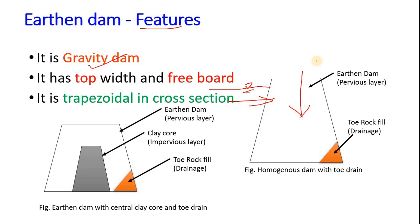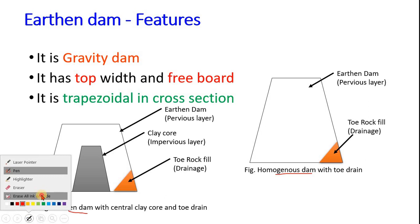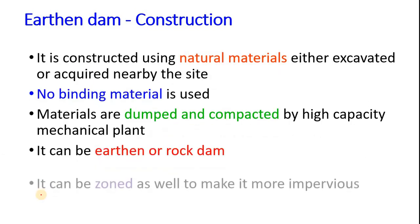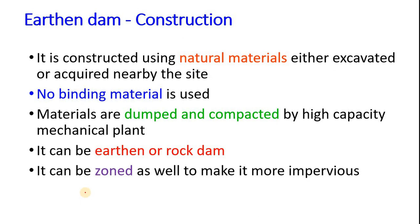It has a top width and has a trapezoidal cross section as shown in this figure. You can also see this is a homogeneous dam with no core element, but here the core element has been placed to make it more impervious. Construction of gravity dam: generally it is constructed from locally available material by excavating the nearby material.